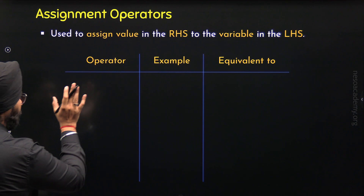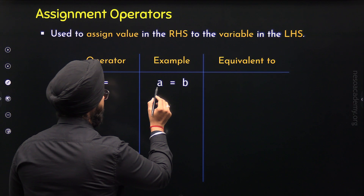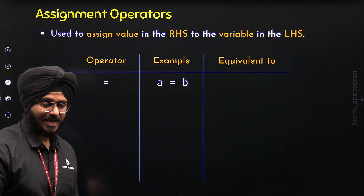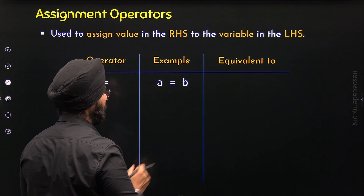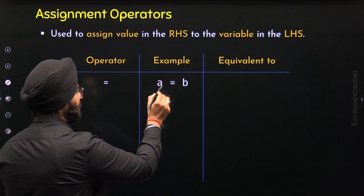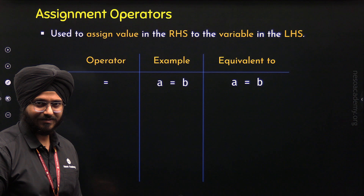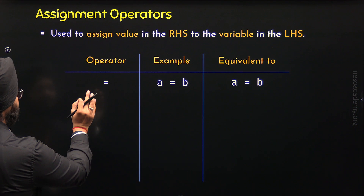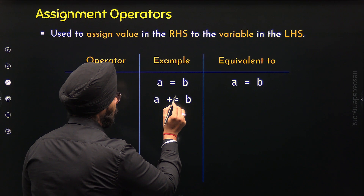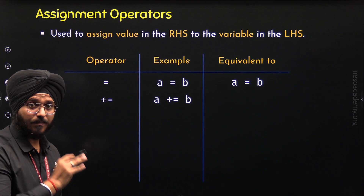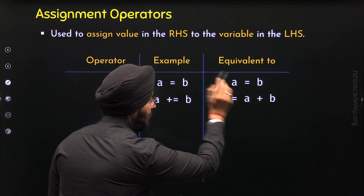The first assignment operator is the simple assignment operator. The example is A = B, which you can read as 'A gets B', because variable A will get the value B. This expression is equivalent to A = B, so there is no difference. The second assignment operator is plus-equals. The example is A += B, which is equivalent to A = A + B.